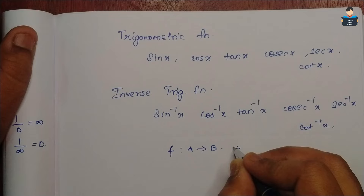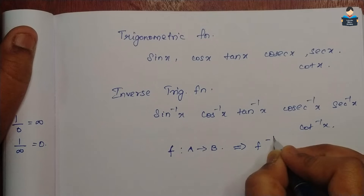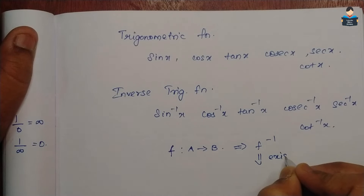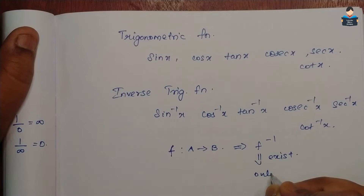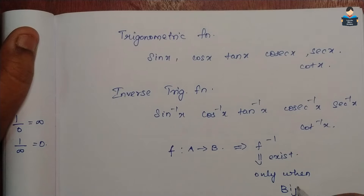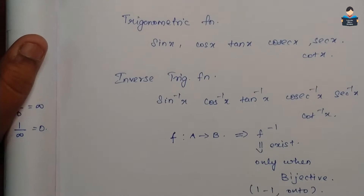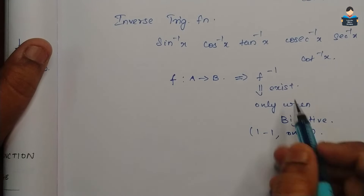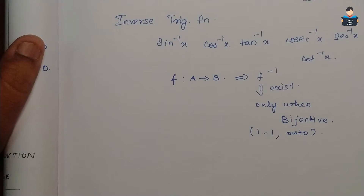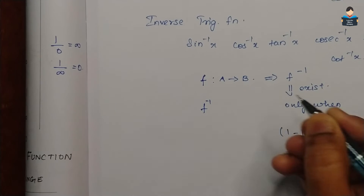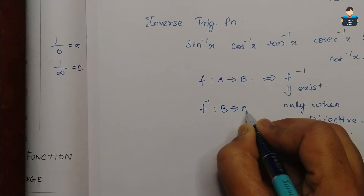If we denote f inverse, then f inverse exists only when the function is bijective, that is one-to-one and onto. In that case, f inverse maps from B to A.